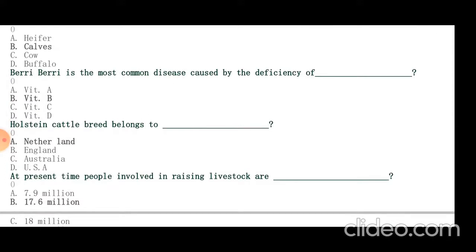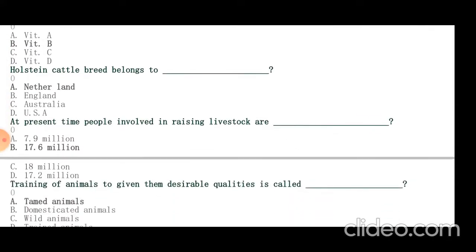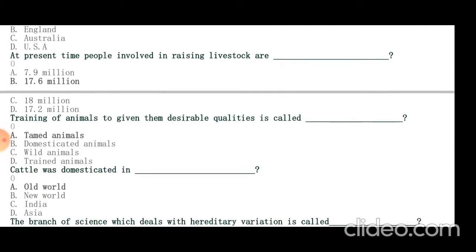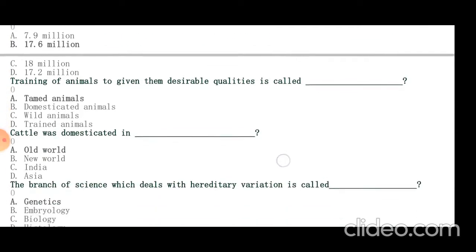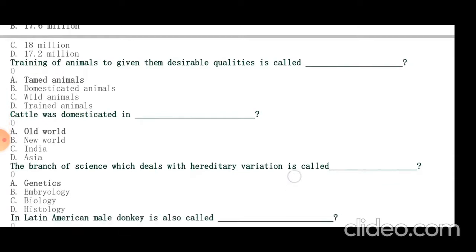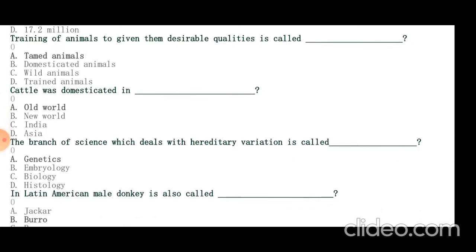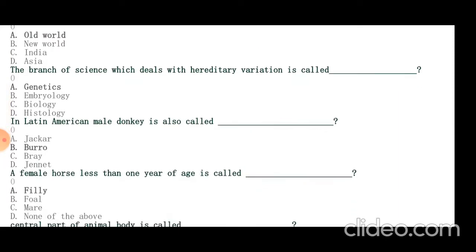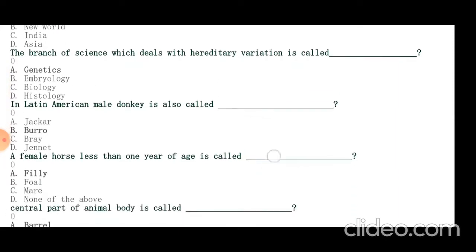At present time, people involved in raising livestock are 17.6 million. Training of animals to give them desirable qualities is called taming. Cattle was domesticated in Old World. The branch of science which deals with hereditary variation is called genetics. In Latin America, male donkey is also called burro.